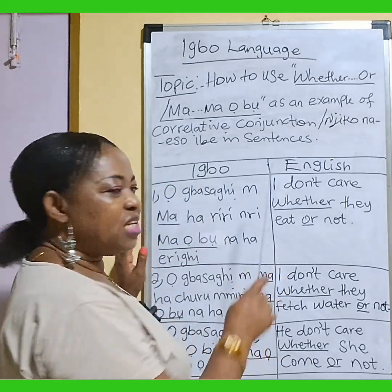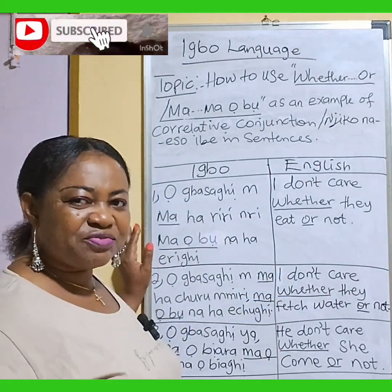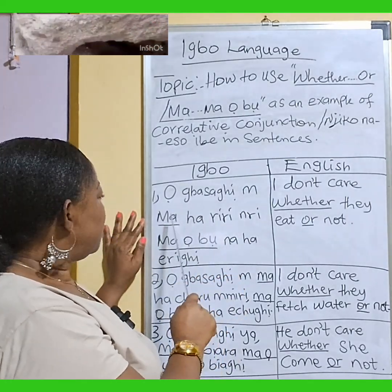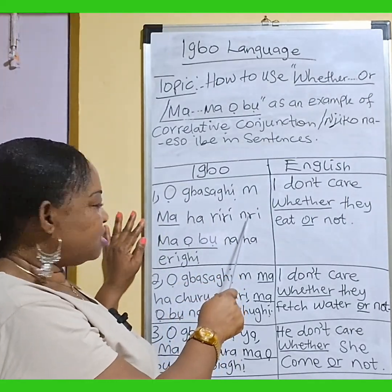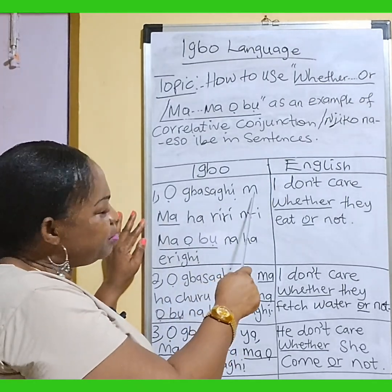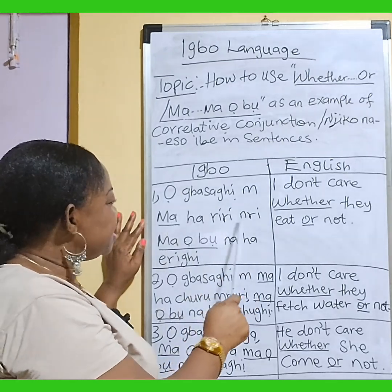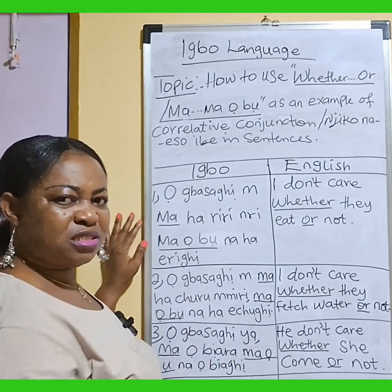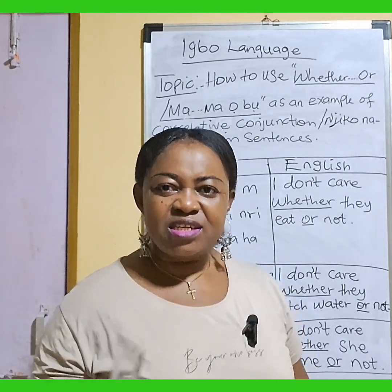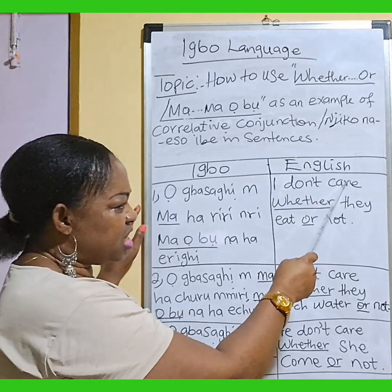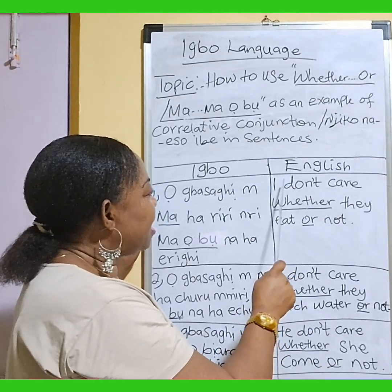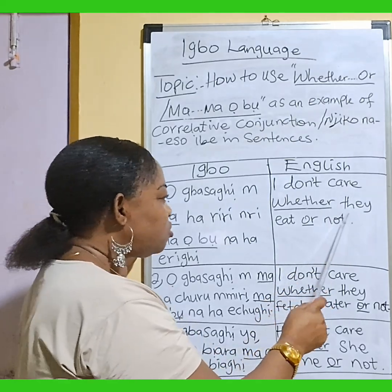Let's start. Ibo, English. Come out, repeat after me. Number one sentence says: 'Obasa him ma hariri unri ma obo ma ha erihi.' In English, it means: I don't care whether they eat or not.